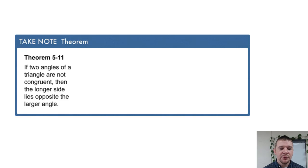Theorem 5-11: if two angles of a triangle are not congruent, then the longer side lies opposite the larger angle. So if the measure of angle A is greater than the measure of angle B, then BC is greater than AC.